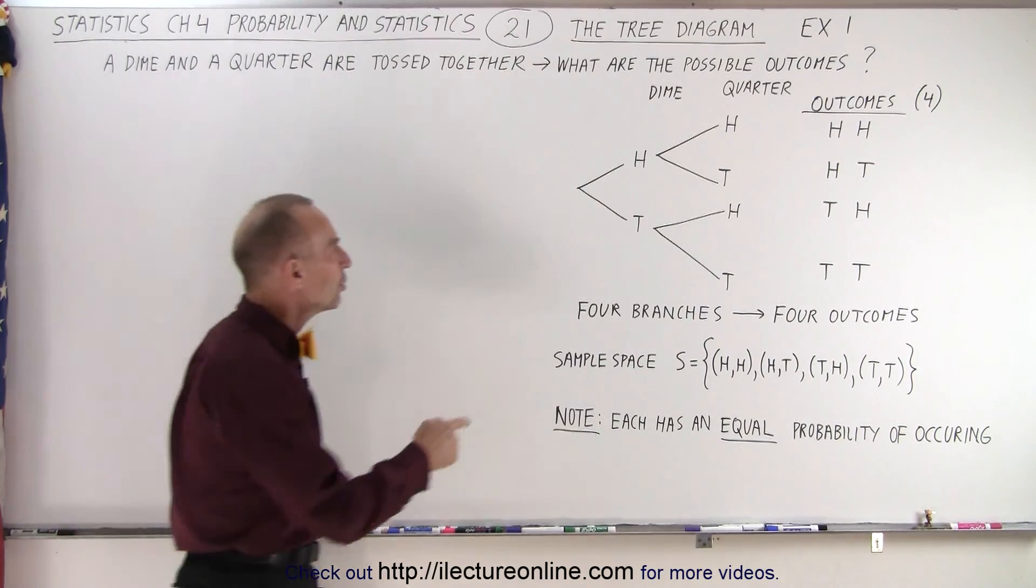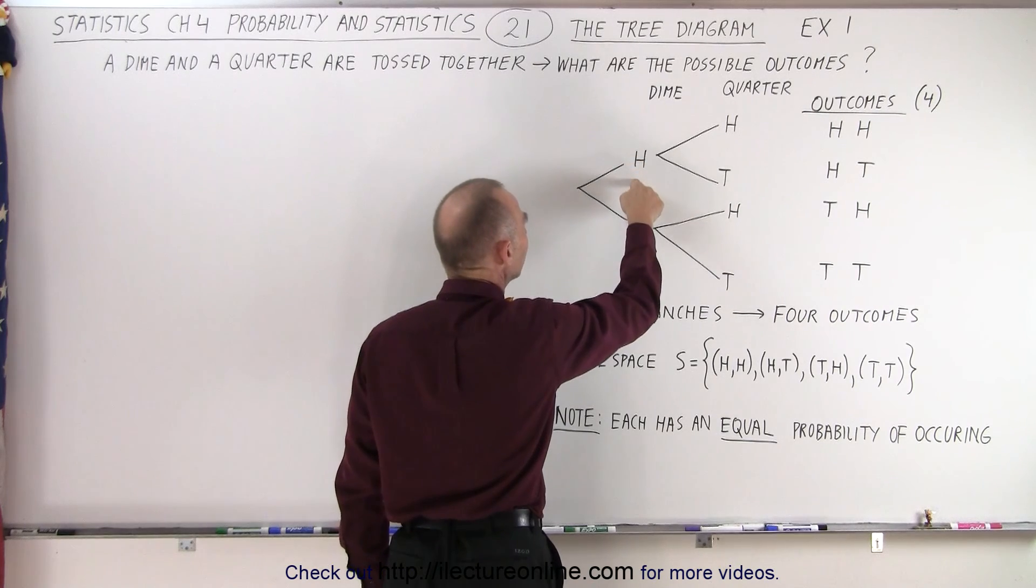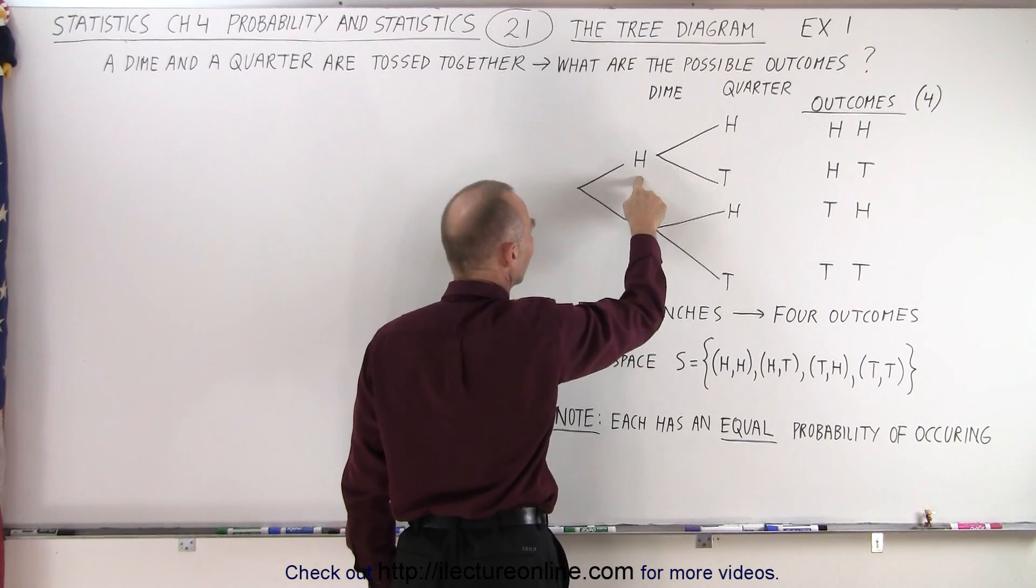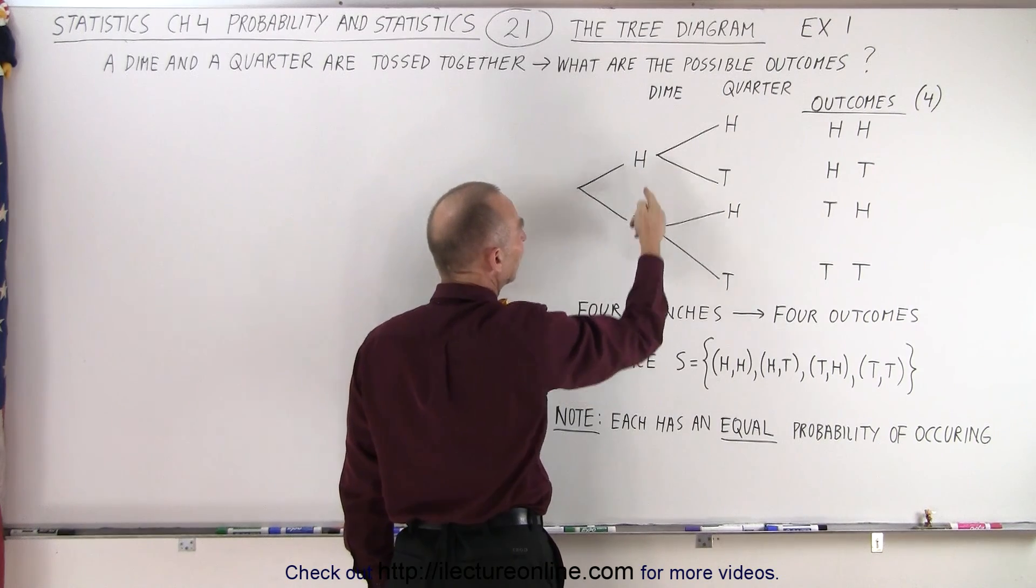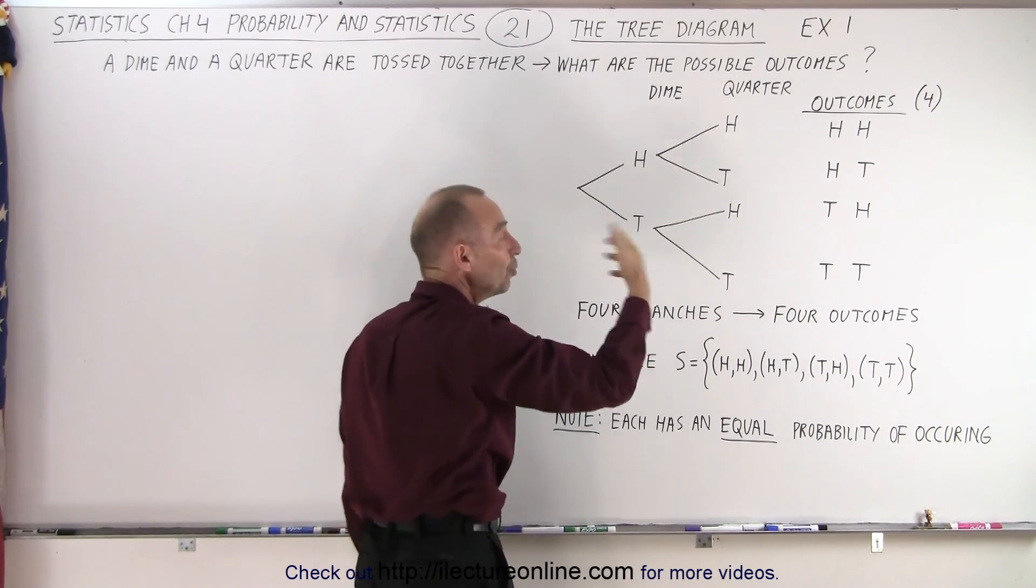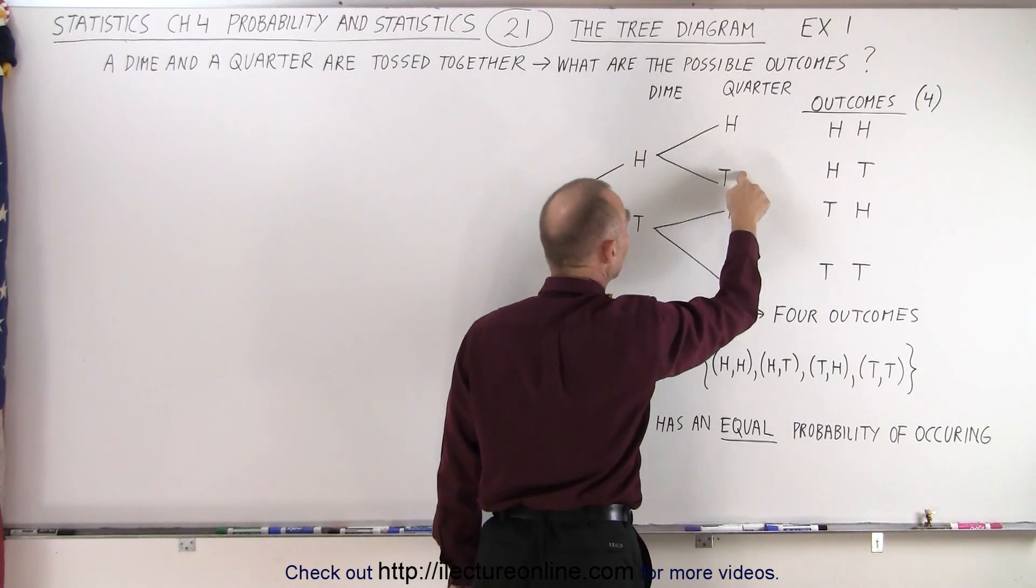So here what we do is we first indicate the possibilities for the dime by itself. Either the dime can be heads or tails. And then if the dime is heads, we have two possibilities for the quarter, heads or tails.